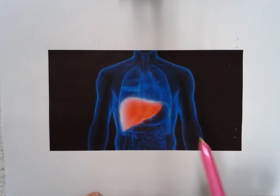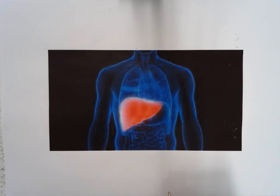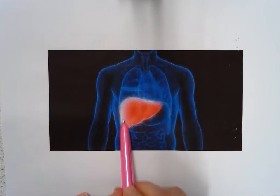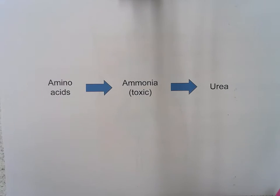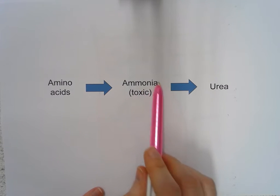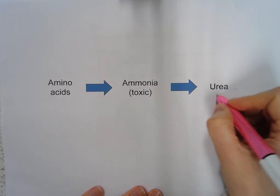Before we do that, it's worth pointing out what urine is actually made of. Urine is made up of a mixture of water, mineral ions — salts like sodium, potassium, and chloride — and most importantly a waste product called urea. Urea is formed when we have excess proteins in our diet, leading to a buildup of too many amino acids. The liver breaks down those amino acids, first into ammonia — which is very toxic — and then very quickly converts that into urea, which is lost out of the body in urine.